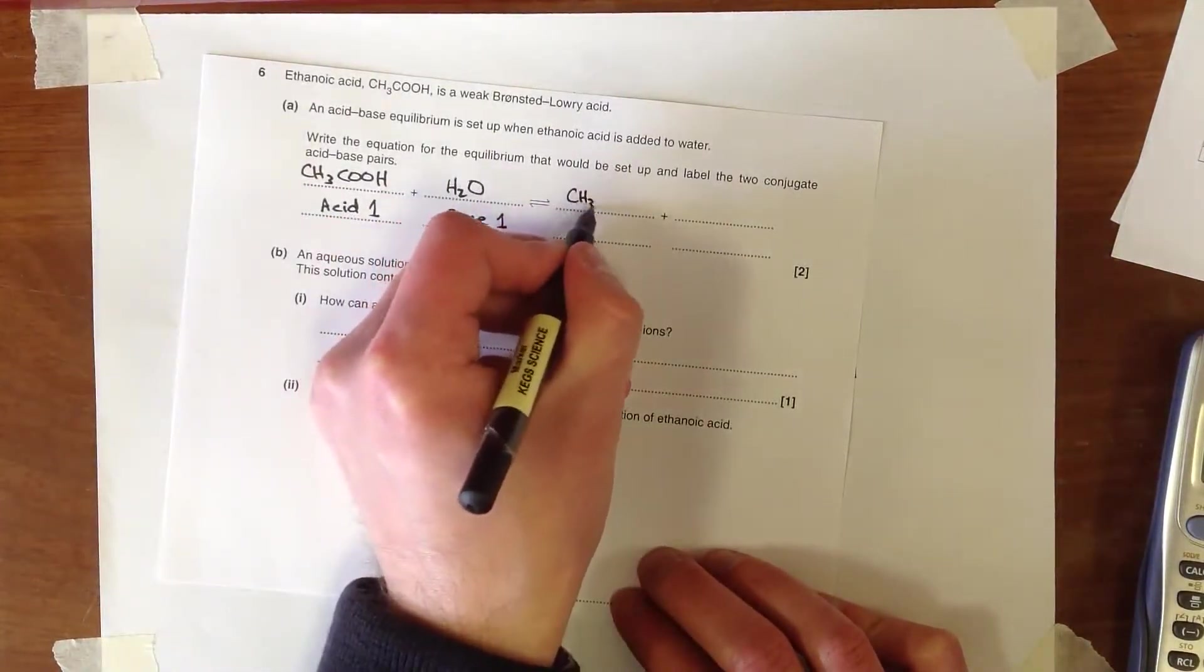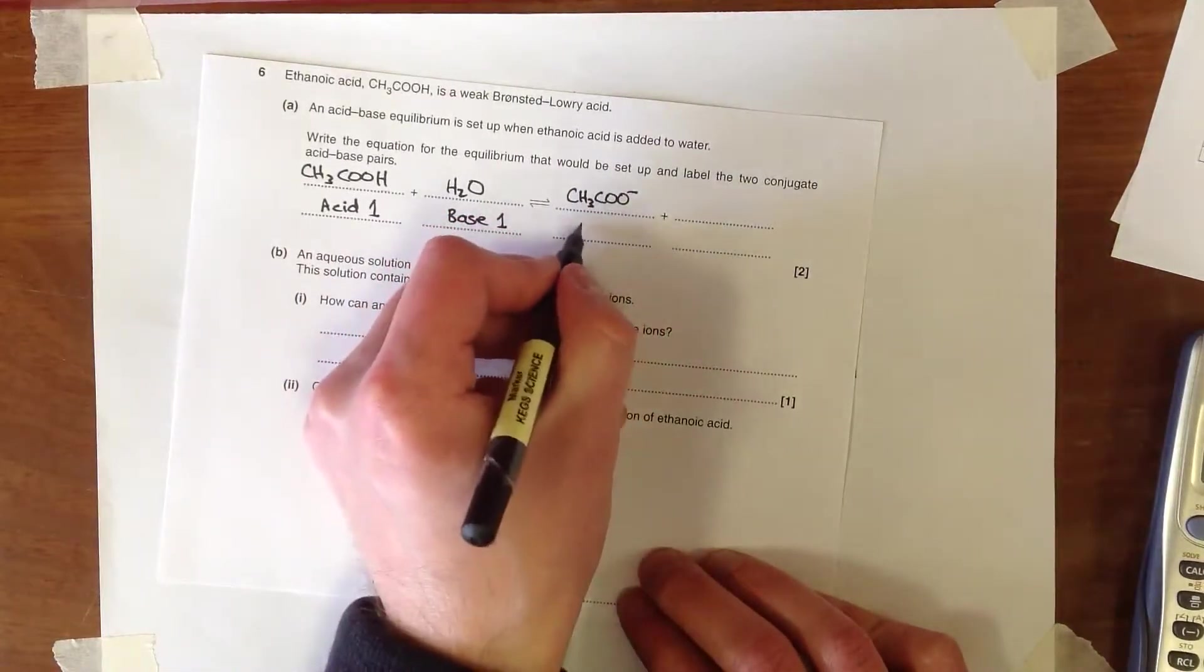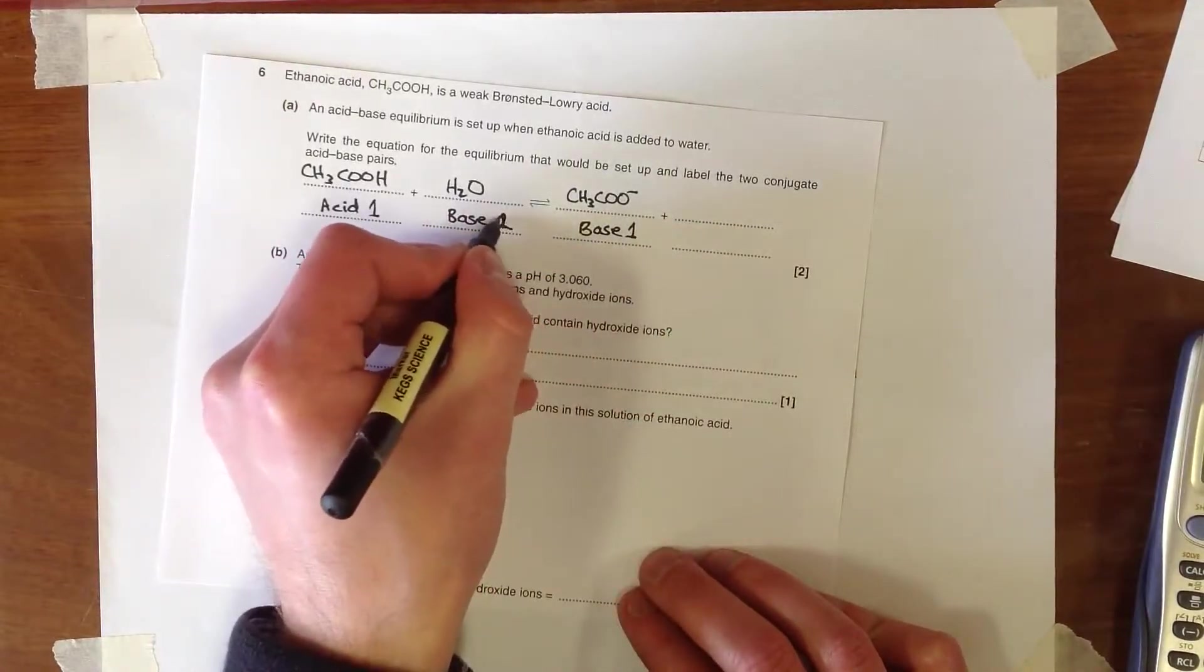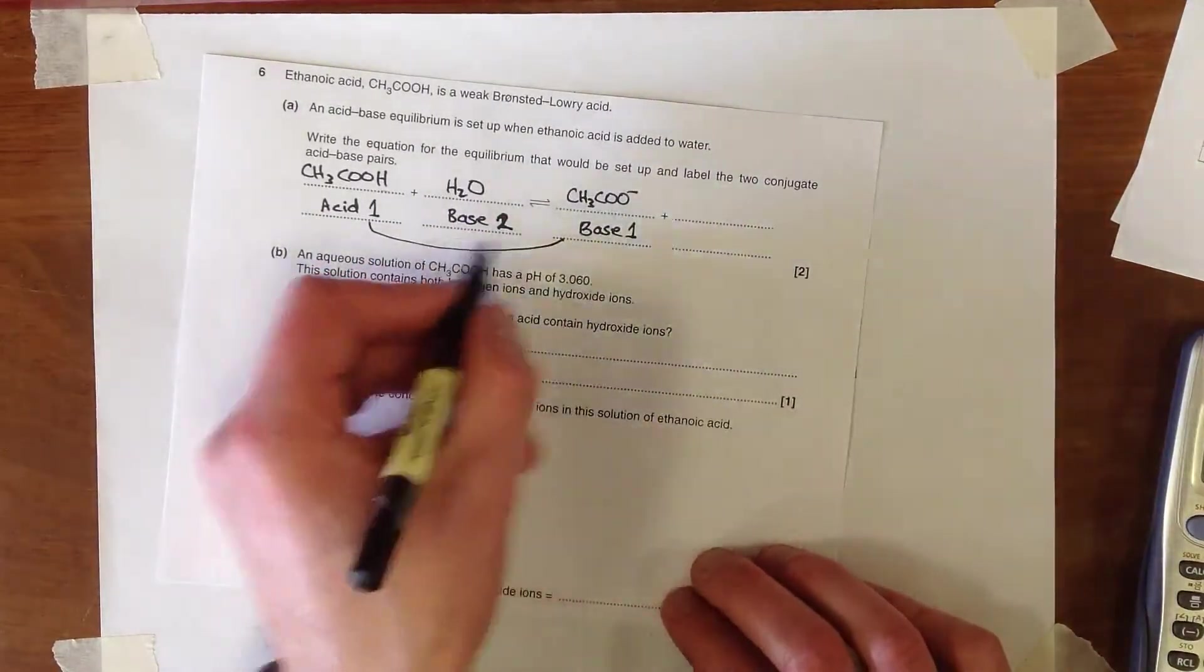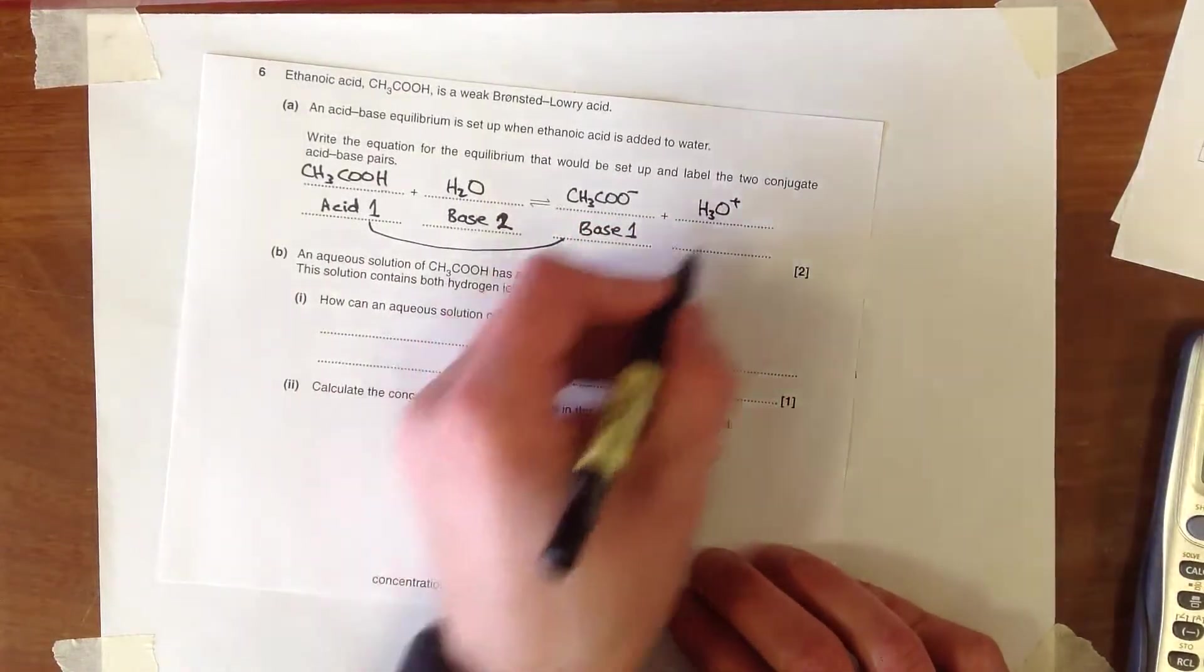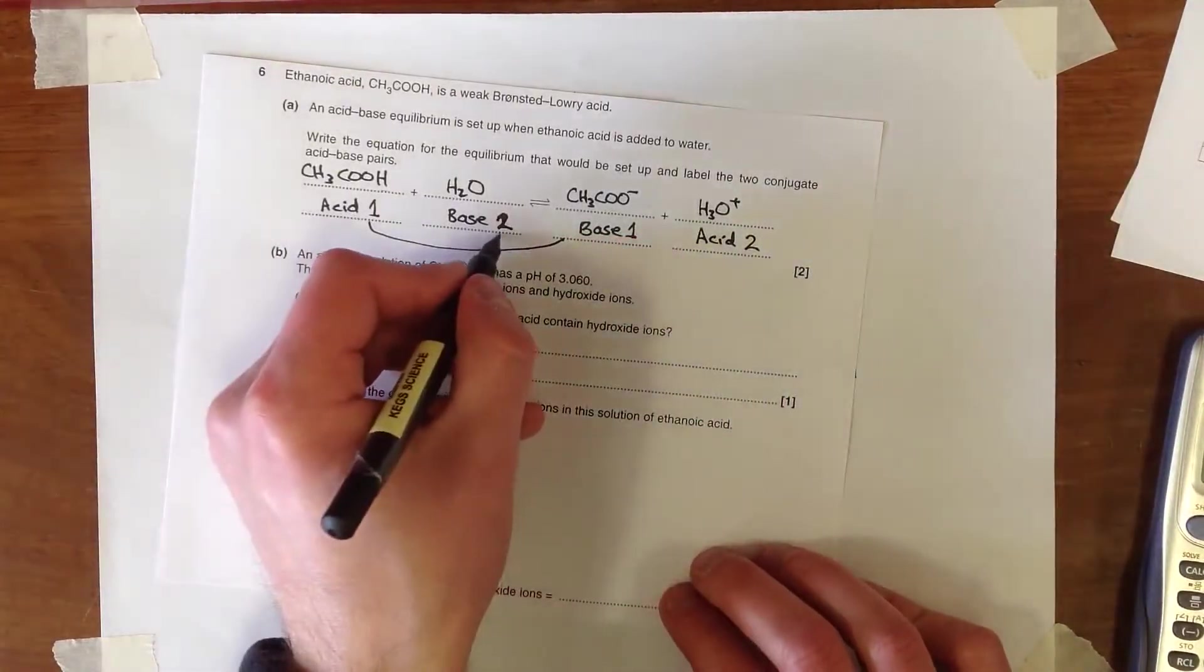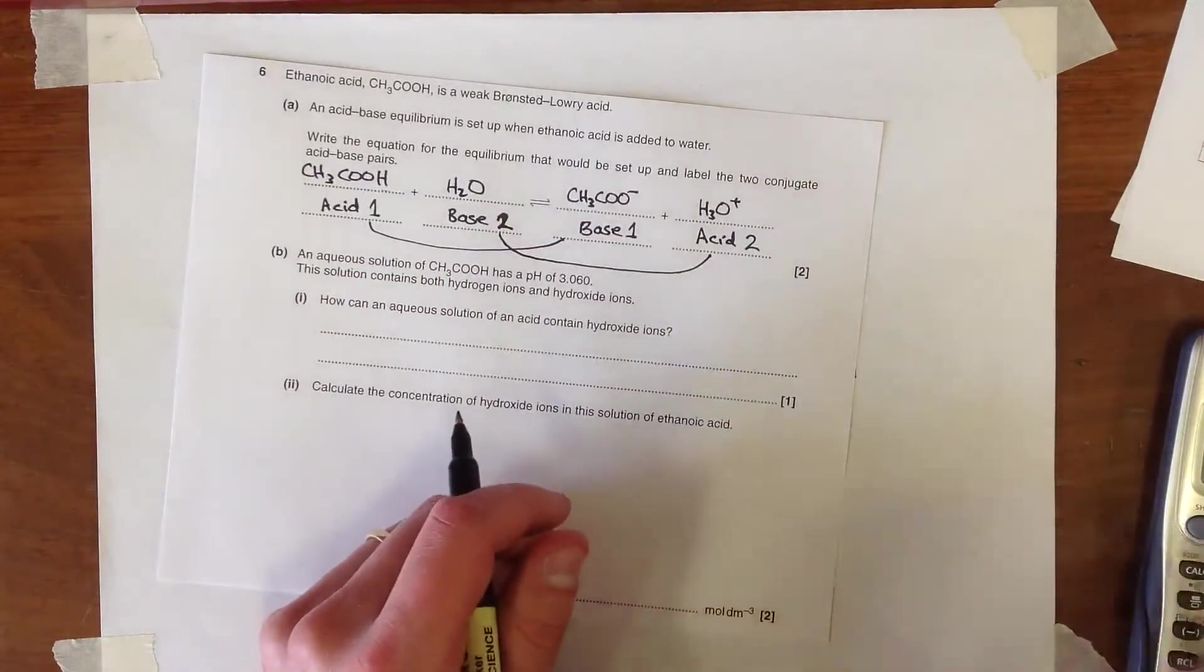And that is going to produce the conjugate base of ethanoic acid. This is going to be base 1, this one would actually be base 2, because we want to label the pairs so these ones are a pair. And then that's going to produce H3O+ the hydronium ion, which is essentially going to be the conjugate acid of water, which is that base. So we can link these together by lines just to highlight that that is the case.